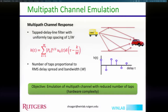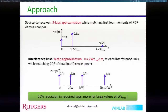The objective here is: can we emulate this multipath channel using a reduced number of taps to lower complexity? W is the bandwidth — for a wideband channel of 20, 100, or 200 MHz, W would be large. We have taken two approaches: emulation of source-to-receiver using a three-tap approximation matching the first four moments of the power delay profile, and for emulation of interference links using N-tap approximation for each link, which matches the CDF of total interference power.